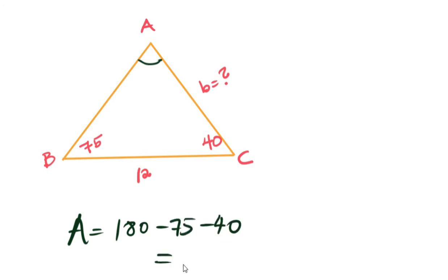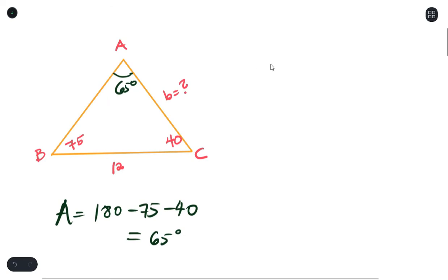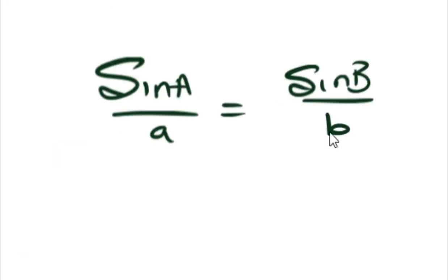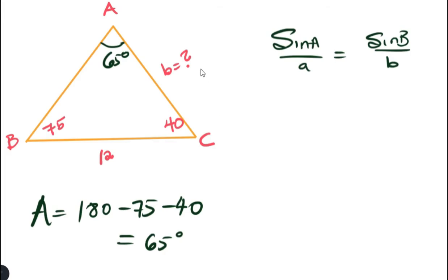So angle A is equal to... We do this because the interior angles of a triangle add up to 180 degrees. So that is 65 degrees. Now we can now use the formulas of sine rule which says that...